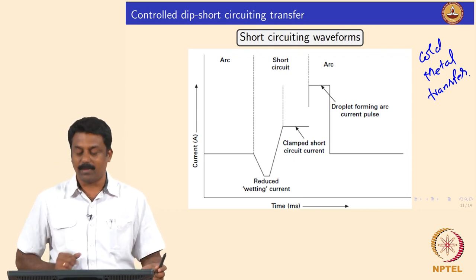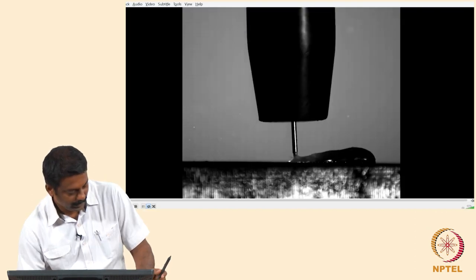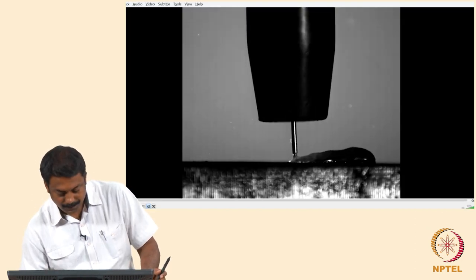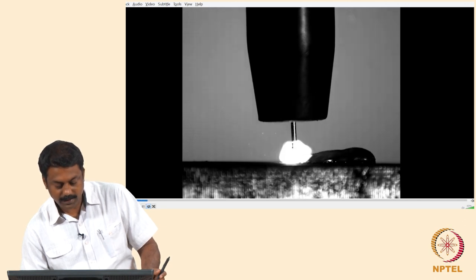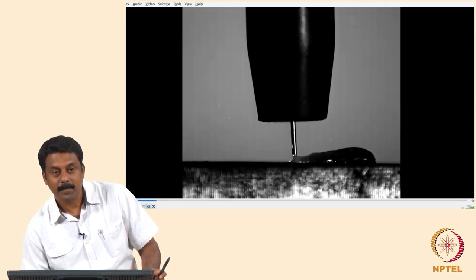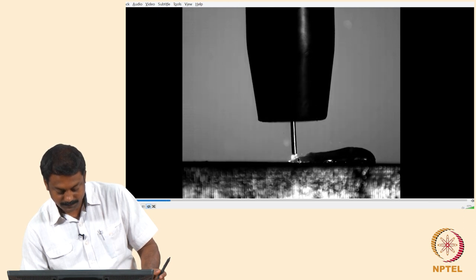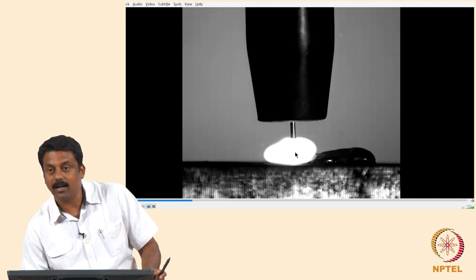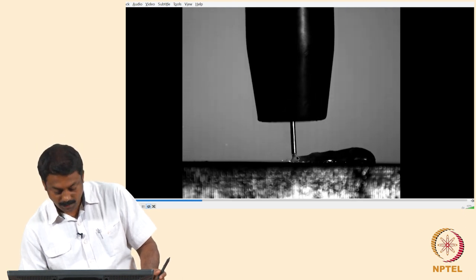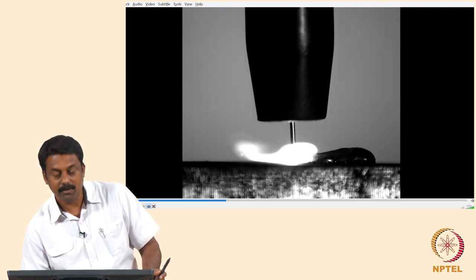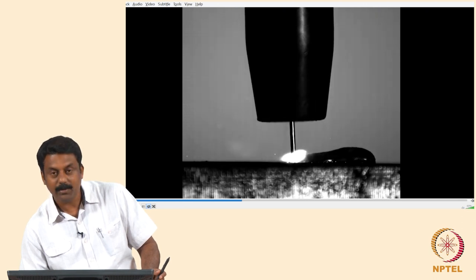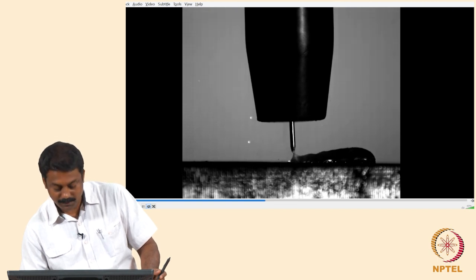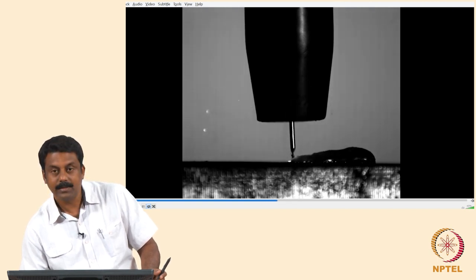In the video you can see the various processes happening. The wire is moving back and forth — there is a short-circuiting event and then an arcing event. During the short-circuiting event the arc completely extinguishes and the droplet is transferred. Then the wire moves out, the arc is formed again, and the cycle is continuously carried out. The droplet is transferred and you can see the molten pool forming.